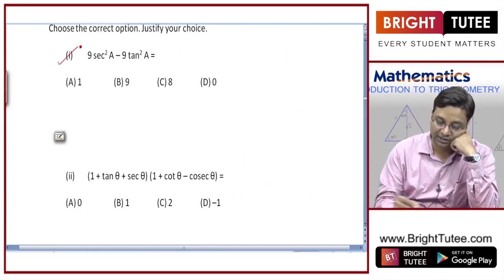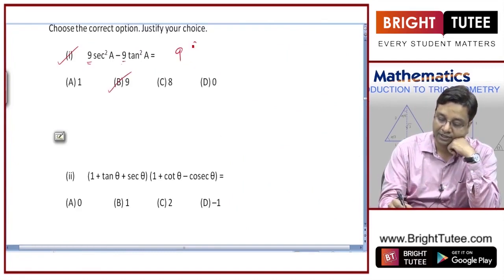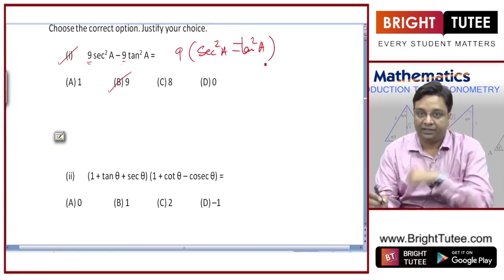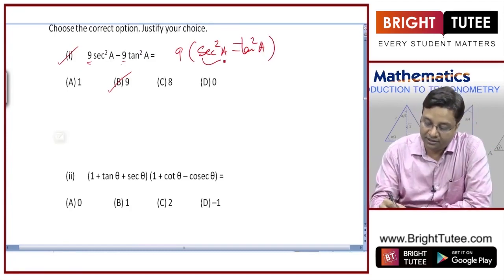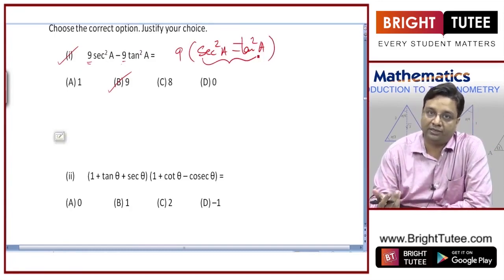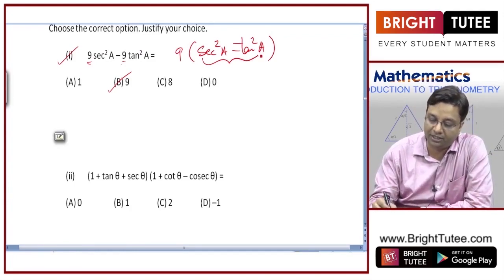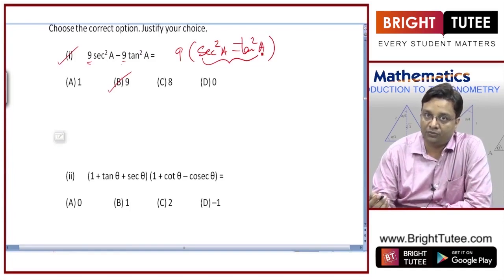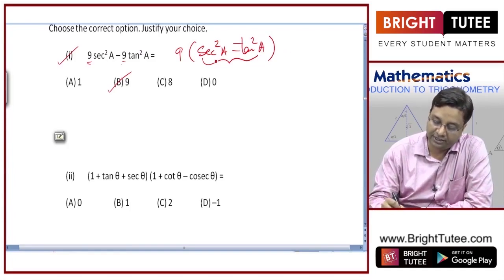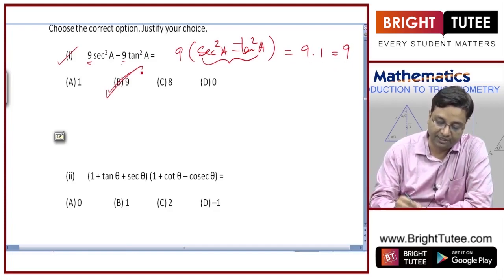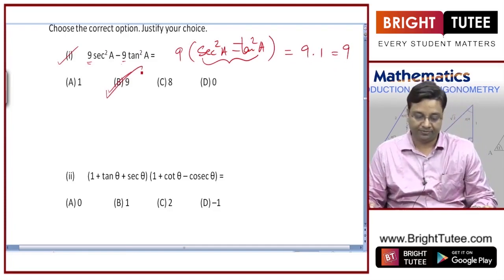For the first MCQ, the answer is B. Taking 9 as common, the expression becomes 9(secant squared a minus tan squared a). Using the identity secant squared θ minus tan squared θ equals one, we get 9 × 1 = 9, so option B is correct.